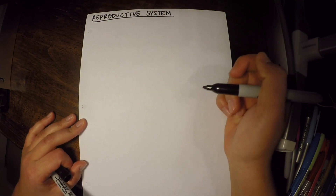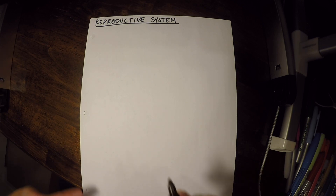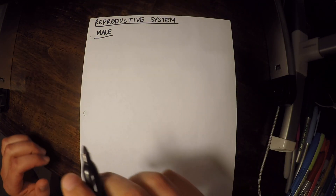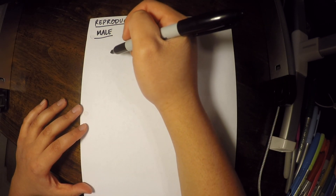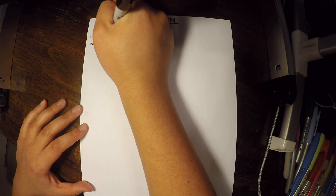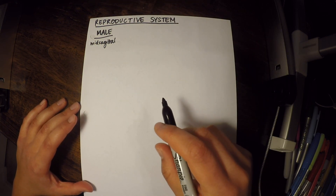The topic of the video today is the reproductive system. We're going to break this system up into male and female. The first thing I'm going to go over is the male system. So let's start by drawing a figure like we usually do — this is going to be a mid-sagittal cut, and we're going to have a lateral view of a male.